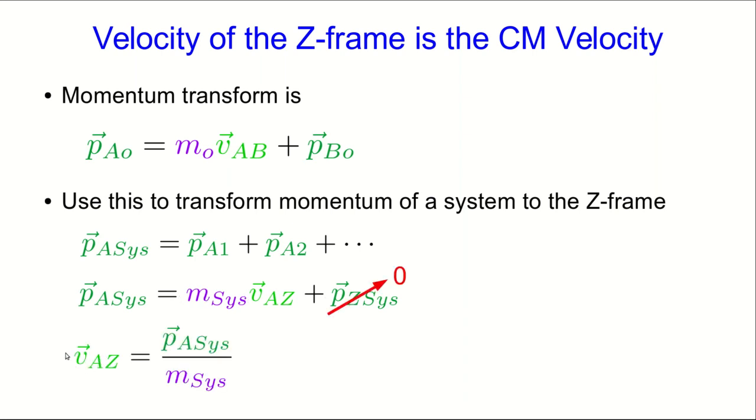Recognize that this is the momentum in the zero momentum frame of the system, which means it's zero by definition. And so now we can solve for what we want, which is this, the velocity of the zero momentum frame. We can see one more thing by expanding out this numerator, which looks like this, and this should ring a bell. This is the velocity of the center of mass. So in fact we already knew how to find the velocity of the zero momentum frame. It's just the velocity of the center of mass.